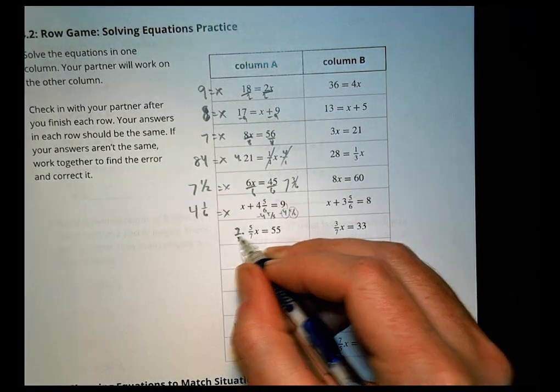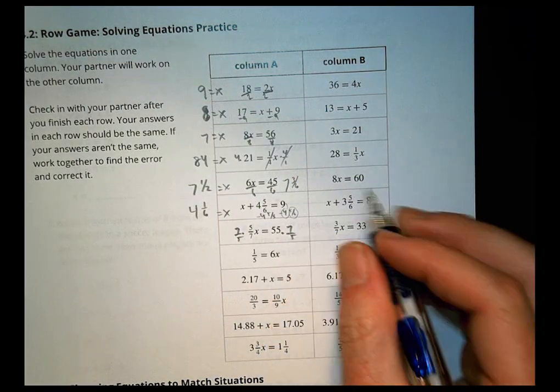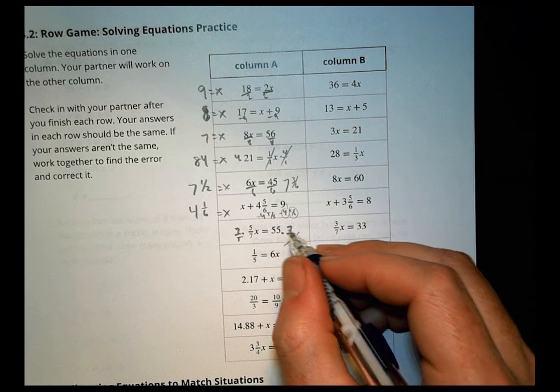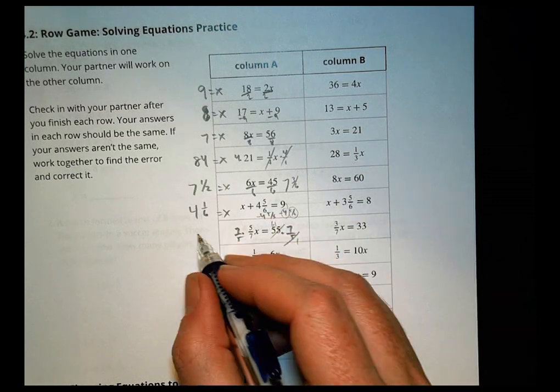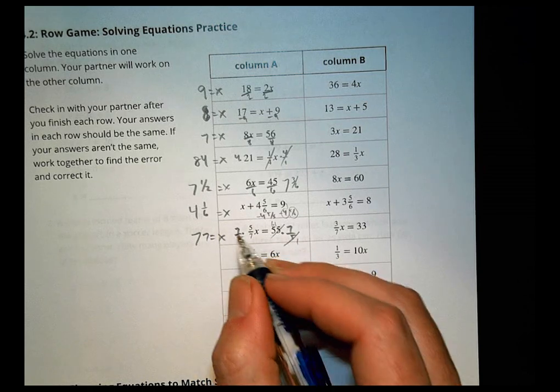On this one, we'll multiply by the reciprocal, 7 fifths, 7 fifths. And that's there, so you can reduce and reduce. And 11 times 7 is 77 equals x.